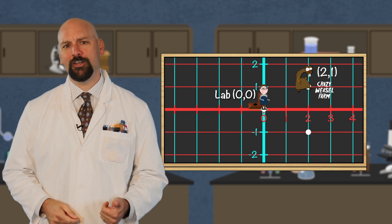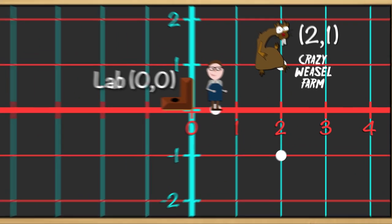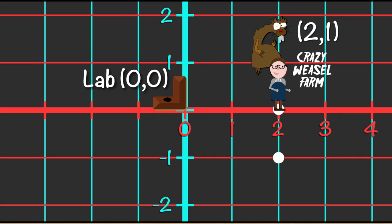You see, instead of the dry cleaners, he went to the crazy weasel farm. Remember, to find two, negative one, we would slide two steps to the right and the negative tells us to jump back one block. They hurt so bad.